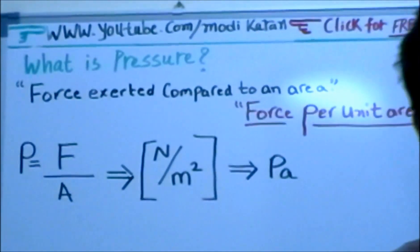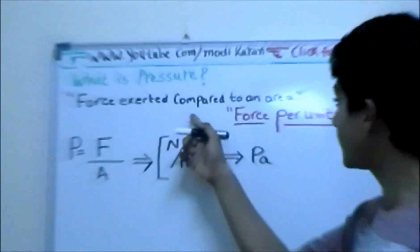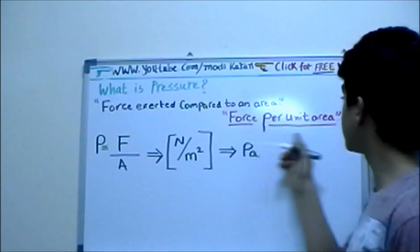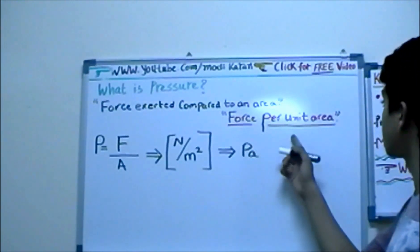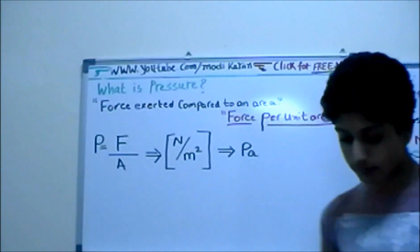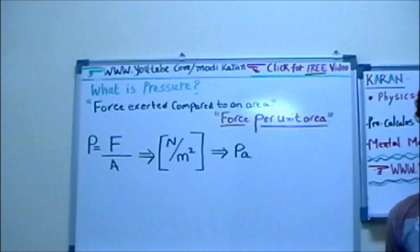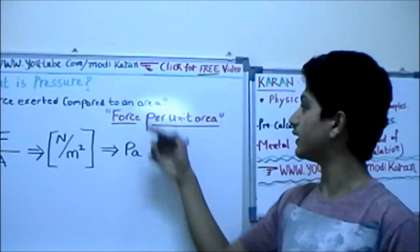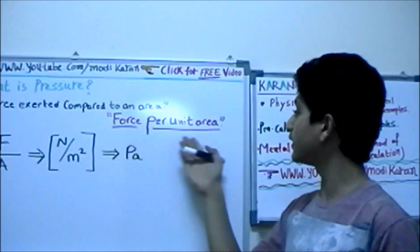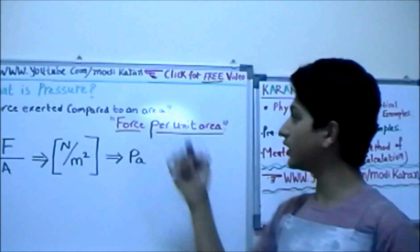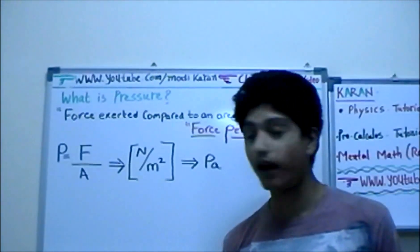the pressure is force exerted compared to an area. Now, to compress that statement, we can use this statement over here, force per unit area. We can say this over here if we just want to say this. So this is basically the compressed part to this long sentence over here. So let's talk more about pressure.